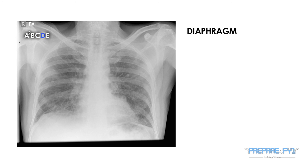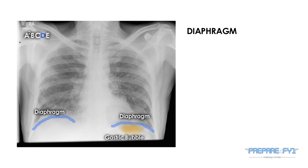D is for diaphragm. Here you can see the diaphragm on the left overlying the stomach, with the gastric bubble visible. On the right, the diaphragm overlies the liver. The diaphragm may be raised on one side or the other as a consequence of pathologies such as phrenic nerve palsy. If you see a gas bubble under the right side of the diaphragm, this may represent perforation of an abdominal viscus.